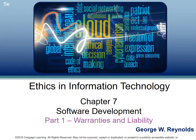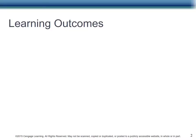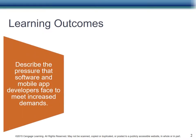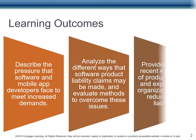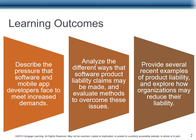Let's now discuss Chapter 7, Software Development. Part 1 looks at warranties and liabilities. The learning outcomes include: describe the pressure that software and mobile app developers face to meet increased demands; analyze the different ways that software product liability claims may be made and evaluate methods to overcome these issues; provide several recent examples of product liability and explore how organizations may reduce their liability.